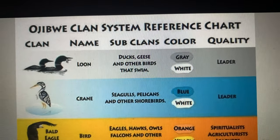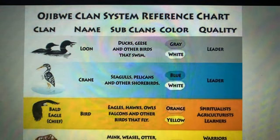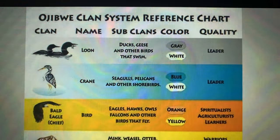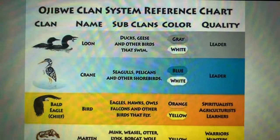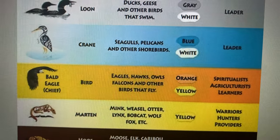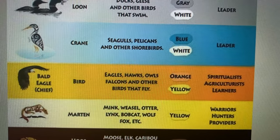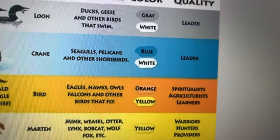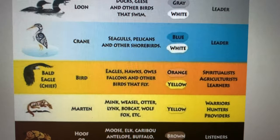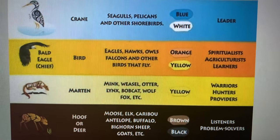Loon — Mong. That clan can include ducks, geese, other birds that swim. They are leaders in their communities, along with Ajijak, our crane. Seagulls, pelicans, all shorebirds for that matter. Bald eagle — Binesi, our bird clan, includes eagles, hawks, owls, falcons, other birds that fly. Their qualities: spiritualists, agriculturalists, and learners. These colors may vary in your community, and these roles are pretty much still the same.